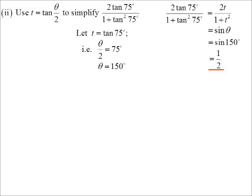Sine 150. Second quadrant, sine is positive. The acute angle would be 30. Sine 30, half. So it turns out to be a half.